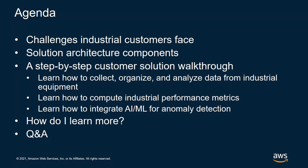First, I'm going to start with the challenges that most industrial customers face, and then I will go through an end-to-end industrial IoT architecture with AWS services. Then I will walk you through a step-by-step customer demo, where I'll show you how you can collect, organize, and analyze data that is being ingested from your industrial equipment into AWS. We'll also learn how to compute industrial metrics, and how to integrate AI and machine learning to detect any anomaly. Then I will give you resources on AWS IoT industrial services, and take questions.